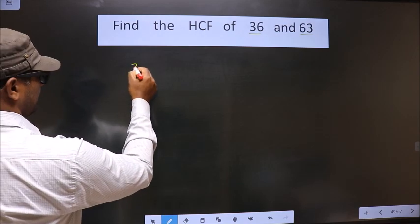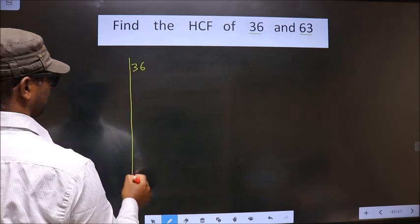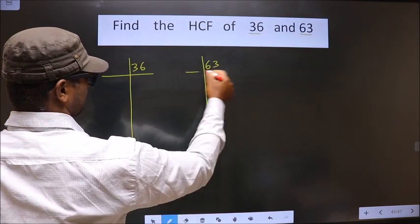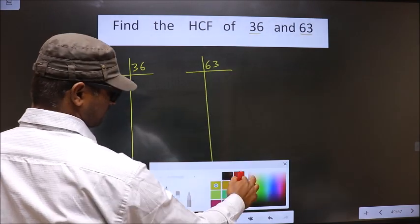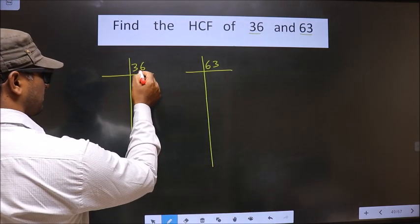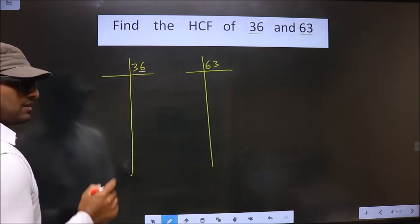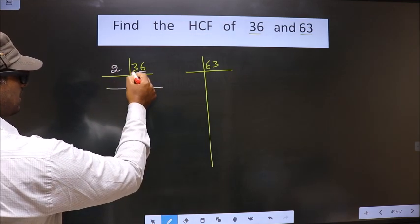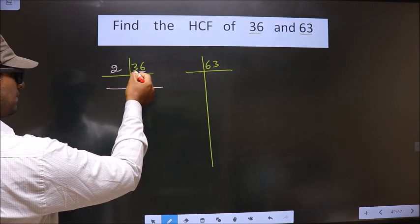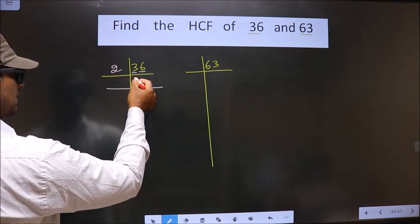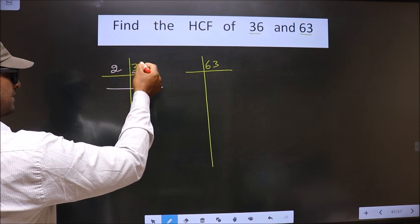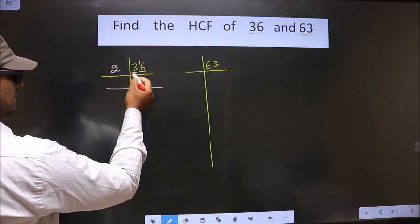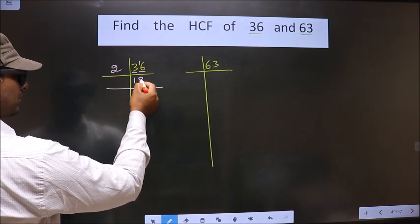That is 36 and 63. Now for this number, the last digit is 6 which is even, so we take 2 here. The first number is 3. A number close to 3 in the 2 table is 2 once 2. 3 minus 2 is 1, carried forward making it 16. When do we get 16 in the 2 table? 2 times 8 is 16.